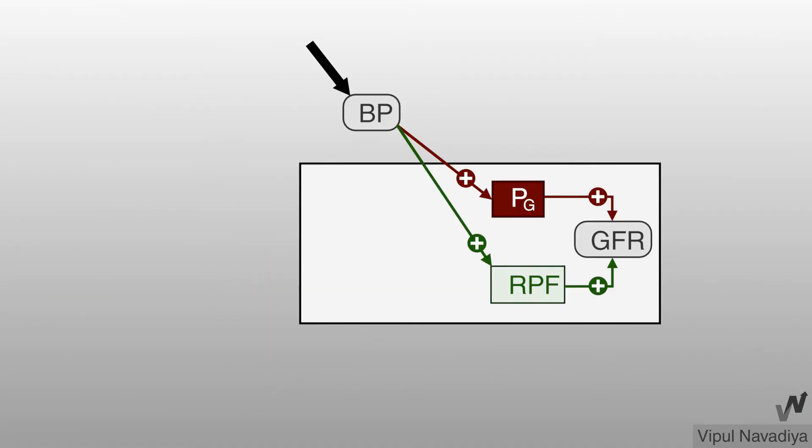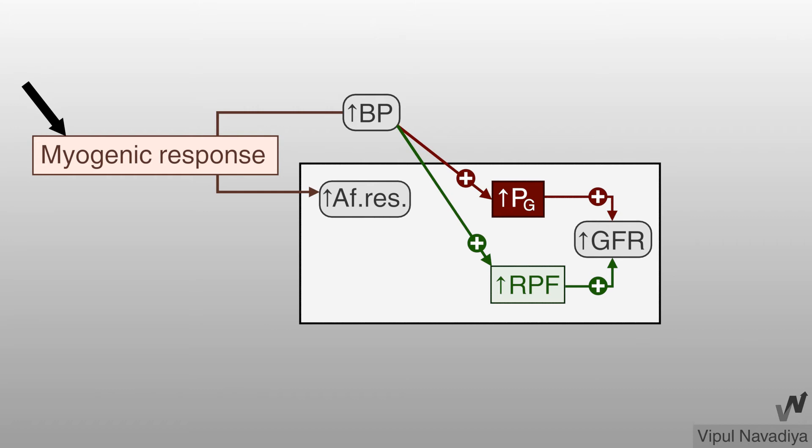In short, rising systemic pressure tends to increase glomerular hydrostatic pressure and renal plasma flow. But due to myogenic response, afferent arteriolar resistance increases which counteracts the rising glomerular hydrostatic pressure and renal plasma flow keeping GFR relatively constant. Hope you understood.